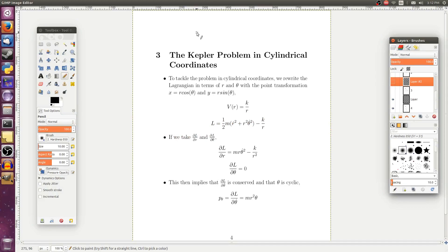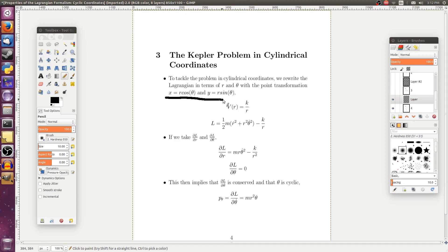However, if we tackle this problem from before in the cylindrical coordinate system, in other words, we need to make the point transformation x = r cos θ and y = r sin θ. Then when we plug that into our potential, we get k/r. But I mean, that's just the definition of that potential. So that's a little bit easier.